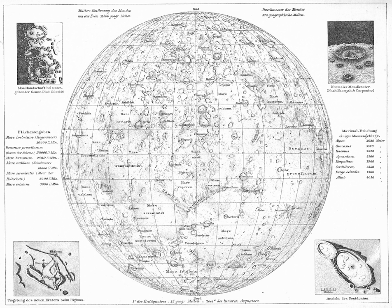When images are first obtained of the surface of a planet or satellite, a theme for naming features is chosen and a few important features are named, usually by members of the appropriate IAU task group.